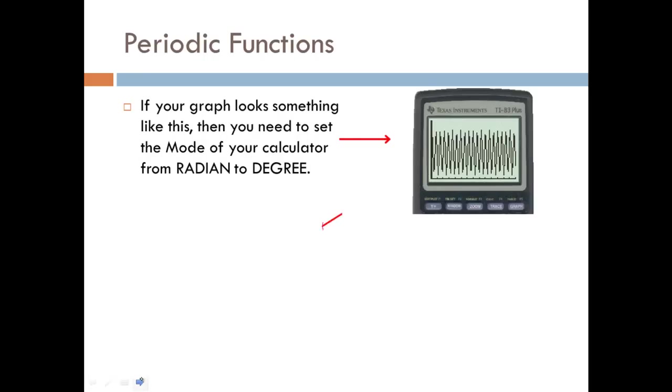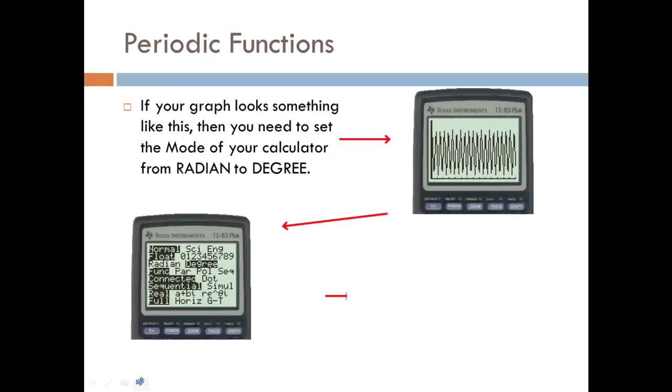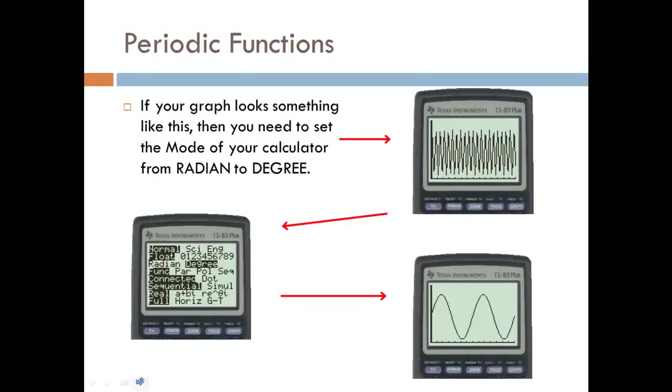When you go to the graph, if it looks really spiky, it doesn't look right. All the maximum and minimums are very thin and you get a lot of them throughout your graph. Sometimes that can just be a sign that your calculator is in the wrong mode. What you need to do is go into the mode menu and change it from radians to degrees. Once you have it set to degree mode, you should be able to get the graph that we had originally.